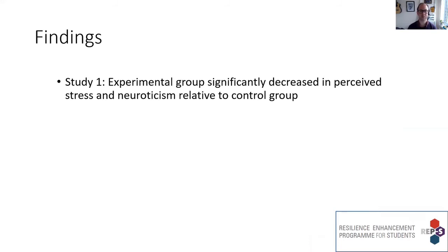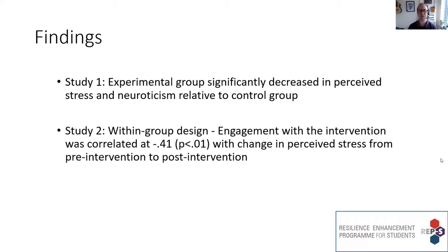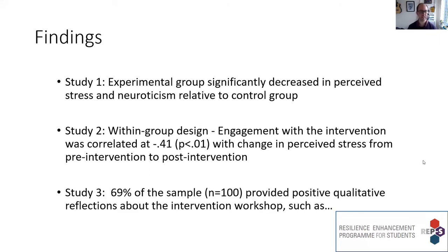The findings from those studies were as follows. In the first study, the experimental group significantly decreased in perceived stress and neuroticism relative to the control group over a period of a month. In study two, engagement with the intervention was correlated at minus 0.41 with changes in perceived stress from pre- to post-intervention — a really robust correlation between doing the techniques more and experiencing less stress. In study three, 69% of the sample — 100 out of 145 participants — provided positive qualitative reflections about the intervention. The remaining 31% did not provide reflections; there were very few constructive suggestions and very little that had any negative tone.